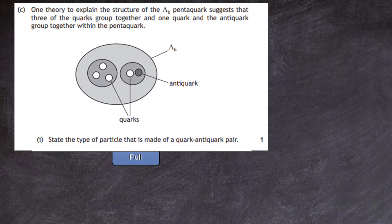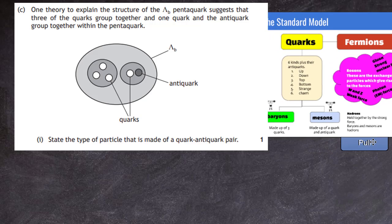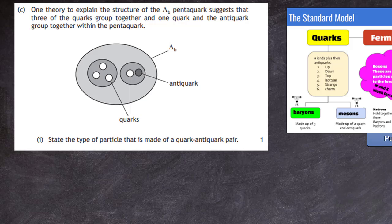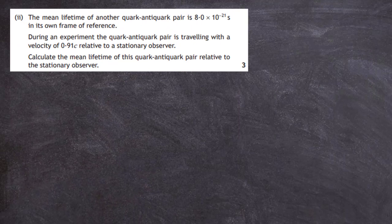Question 7 part c(i): one theory suggests that three quarks group together and one quark and an anti-quark group together within the pentaquark. We are asked for one mark to state the type of particle made of a quark anti-quark pair. From the standard model diagram, mesons are made up of a quark and an anti-quark. You have to know the difference between a baryon and a meson. The answer is a meson — m-e-s-o-n. Just learn the chart.